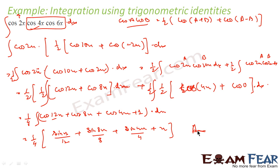So here also we went from complex to simpler and then even simpler form using trigonometric formulas. That is the power of trigonometric formulas. Earlier we saw the power of substitution, and now we have seen the power of trigonometric formulas to convert a complex integral into a simpler one.